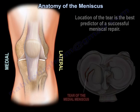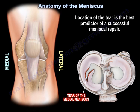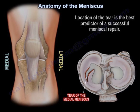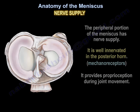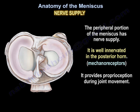The location of the tear is the best predictor of a successful meniscal repair. The posterior horn of the medial meniscus has the highest incidence of degenerative tears. The peripheral portion of the meniscus has nerve supply and is well innervated; in the posterior horn there are mechanoreceptors that provide proprioception during joint movement.